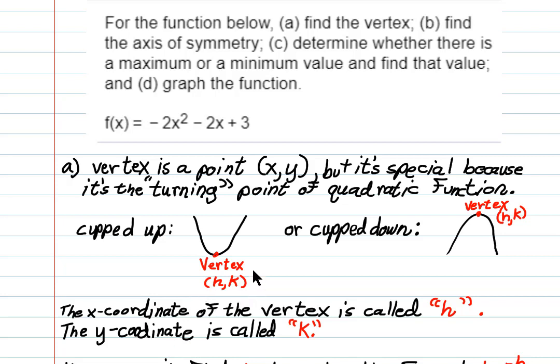Notice that the name of the vertex changes to (h, k). If you've already had transformations, you recognize this as h being the horizontal shift and k being the vertical shift. h and k double as that, but here they're meant to represent the x and y coordinates of the vertex.